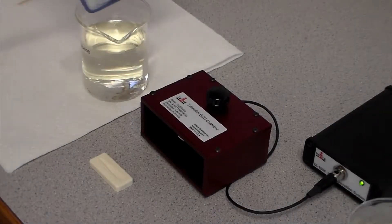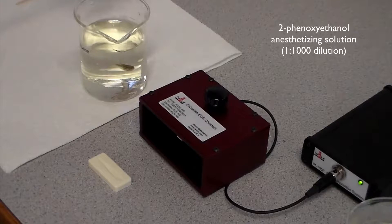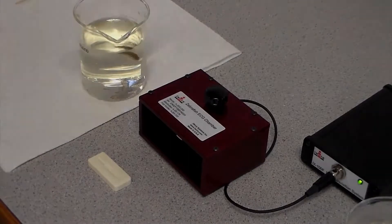For recording ECG, the zebrafish is placed in a 2-phenoxyethanol anesthetizing solution, which is a 1 to 1000 dilution, for approximately 3 minutes until there is minimal gill motion.